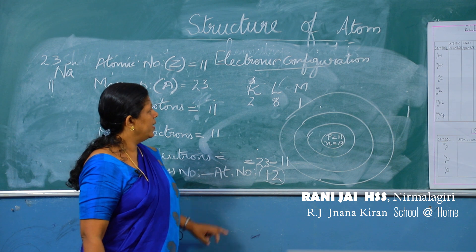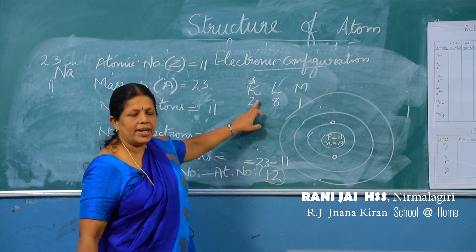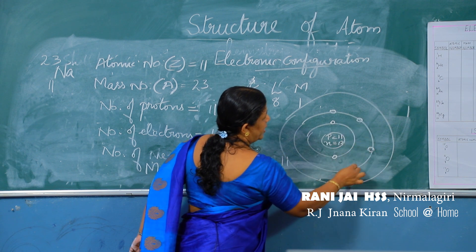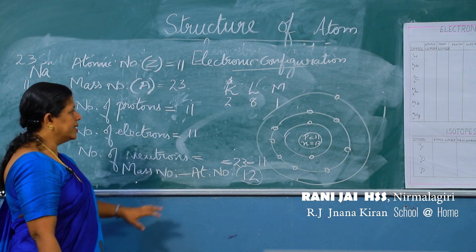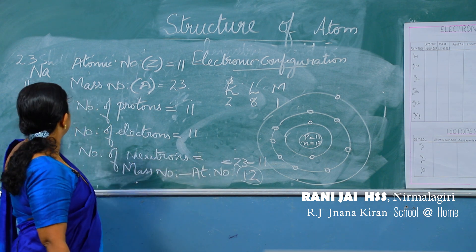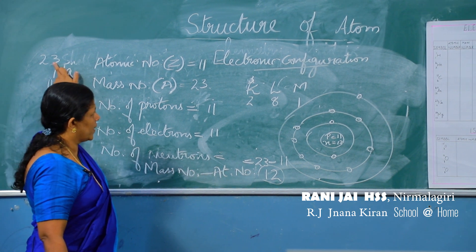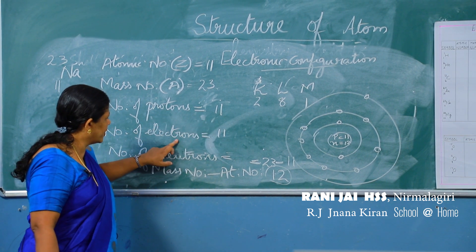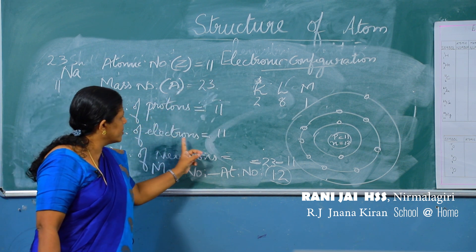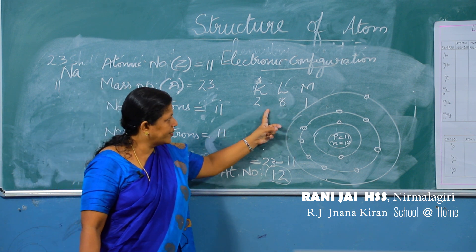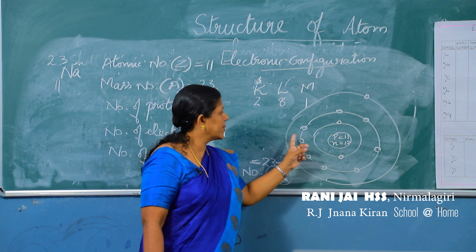In the K shell, place 2 electrons. In the L shell, place 8 electrons. In the M shell, place 1 electron. This is the Bohr model of sodium. So if you know the atomic number and mass number, you can find protons, electrons, and neutrons, write the electronic configuration, and draw the Bohr model.